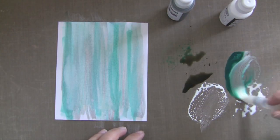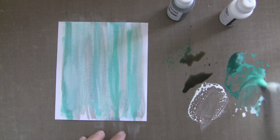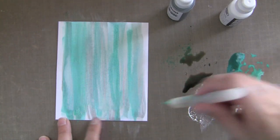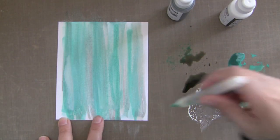Daubers are water based, so they're really good to mix together like this. Here I'm mixing together some white and some tide pool. And you can keep going back and forth adding more colors and mixing colors together.